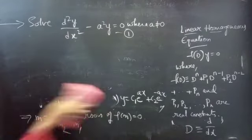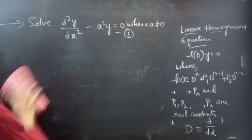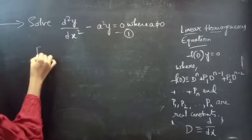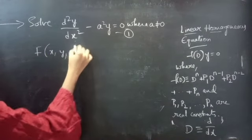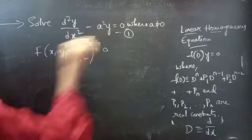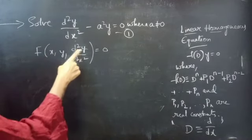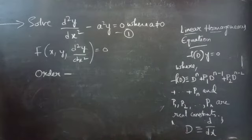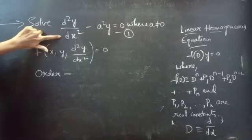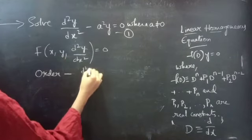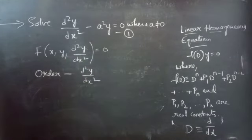Our differential equation is of the form involving d²y/dx². The order of the equation is determined by the highest derivative present. Here the highest derivative is d²y/dx², and we have no other derivative, so the order of the equation is 2.